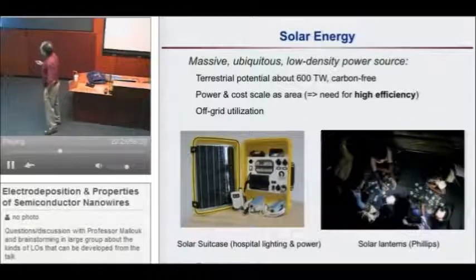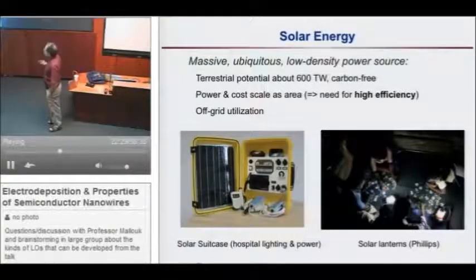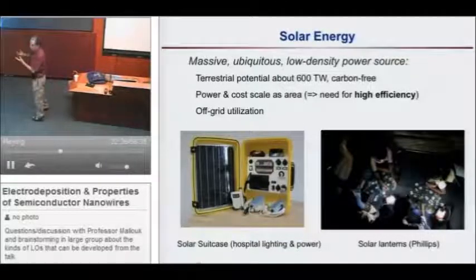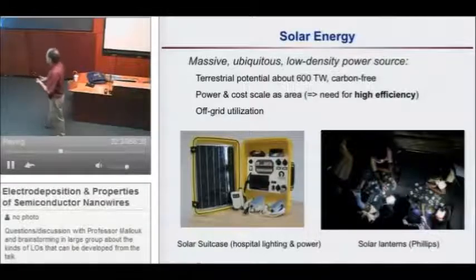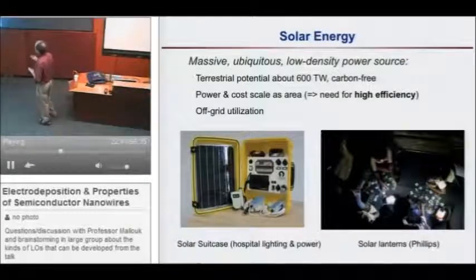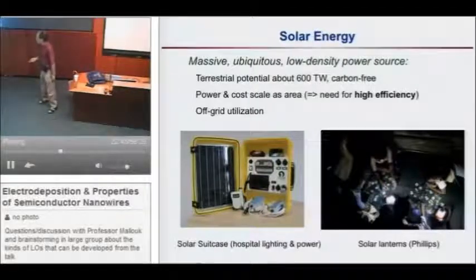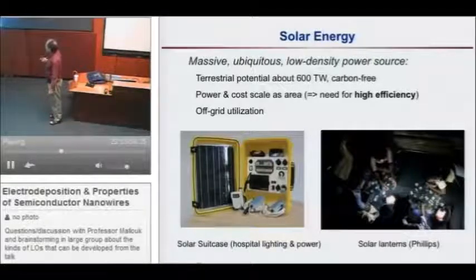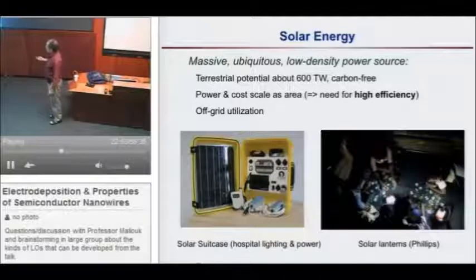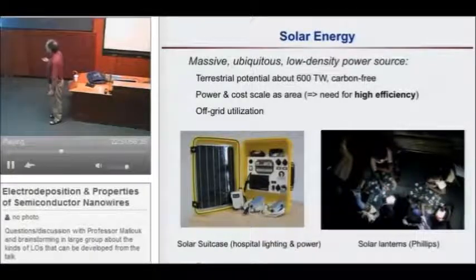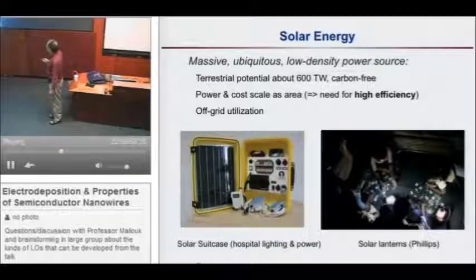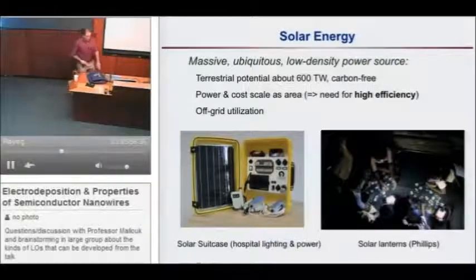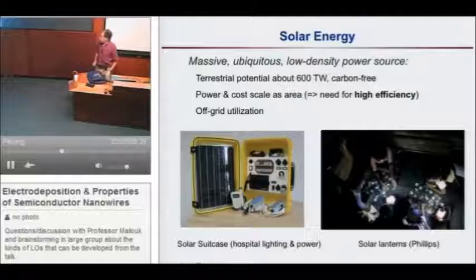If you look at the inventory of the energy we could get out of all the other carbon-free sources, they really don't add up to give us this. But if you think about solar, solar has a terrestrial potential of 600 terawatts. That's really enormous compared to the scale of energy numbers. If we can convert 1/20th of that, we're good for a long foreseeable future. But we need very efficient solar cells because the cost really goes as the area of the solar cell, whatever it's made of. All the costs drop as the area drops.